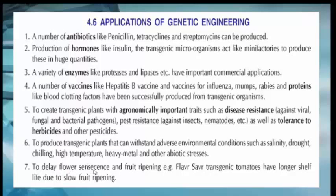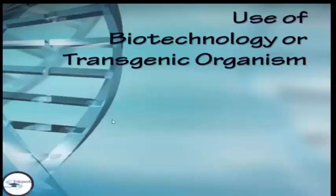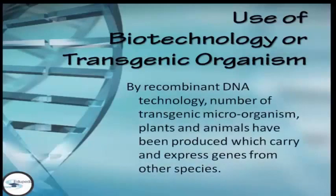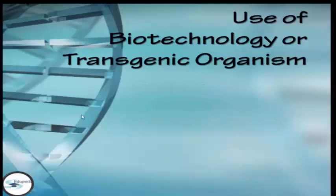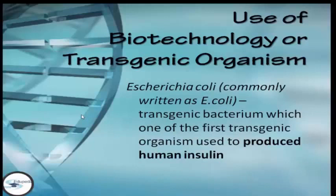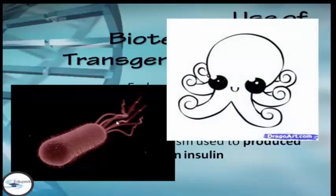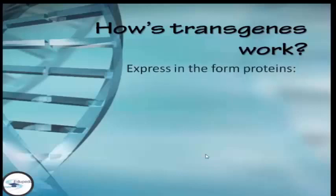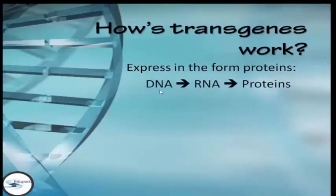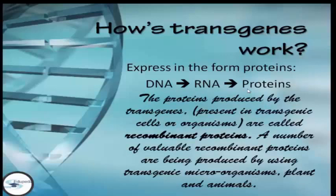We also use biotechnology through transgenic organisms, where recombinant DNA technology has been used to produce a number of transgenic microorganisms, plants, and animals that carry and express genes from other species. E. coli was a transgenic bacterium and one of the first transgenic organisms used to produce human insulin. How transgenes work: they express in the form of proteins — from DNA to RNA to proteins. The proteins produced by transgenes present in transgenic cells or organisms are called recombinant proteins, and a number of valuable recombinant proteins are produced using transgenic microorganisms, plants, and animals.